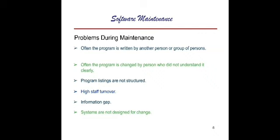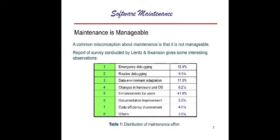What are the different problems that arise during maintenance? Generally, a program is written by another person or group of persons, and when a person is doing maintenance, sometimes program listings are not structured, there is high staff turnover, information gaps, and systems are not designed for change. These are some problems which arise during the maintenance phase, but it is manageable. A common misconception about maintenance is that it is not manageable, but that is wrong.